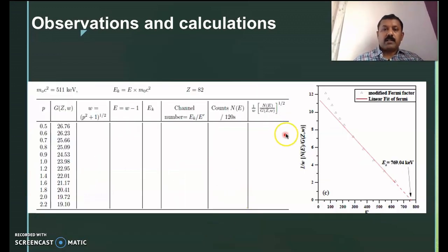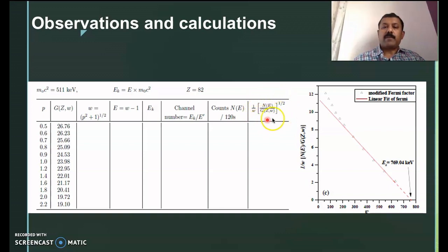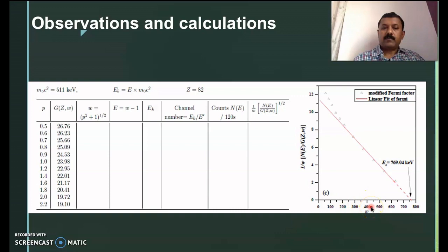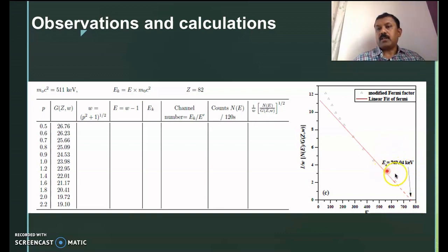Similarly, calculate the counts for all these momentum channels. Once you know N(E), you can calculate the modified Fermi factor, since you know ω, N(E), and the Fermi function from the respective columns. Plot the modified Fermi function on the y-axis as a function of energy. You get a straight line, and the x-intercept gives you the endpoint energy of the beta particles.